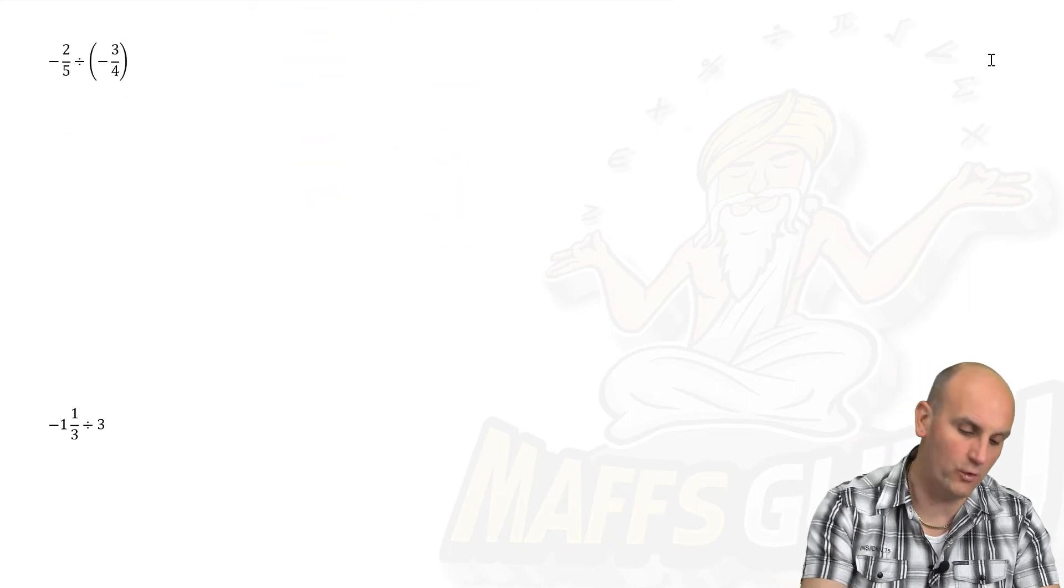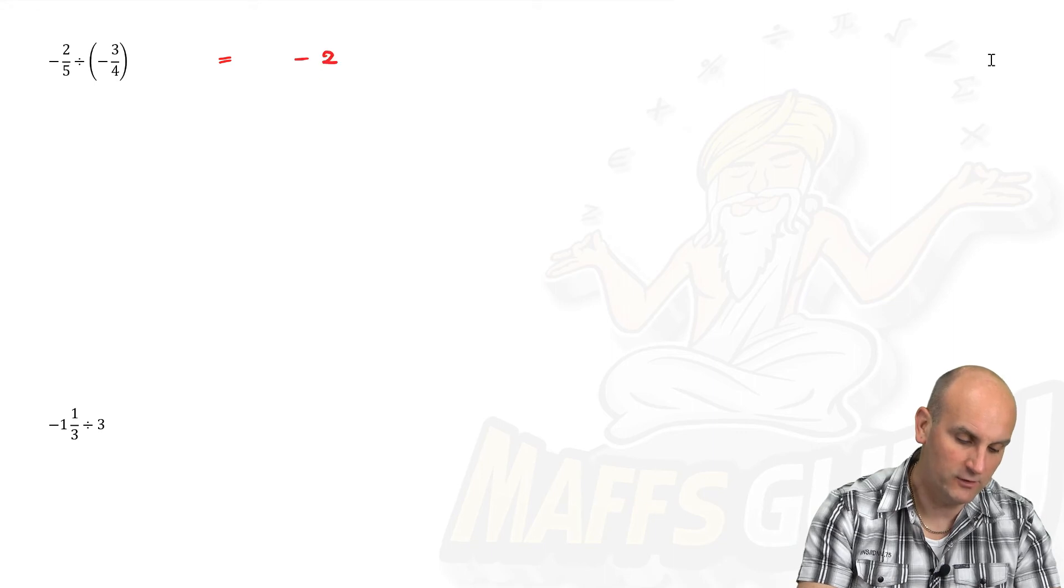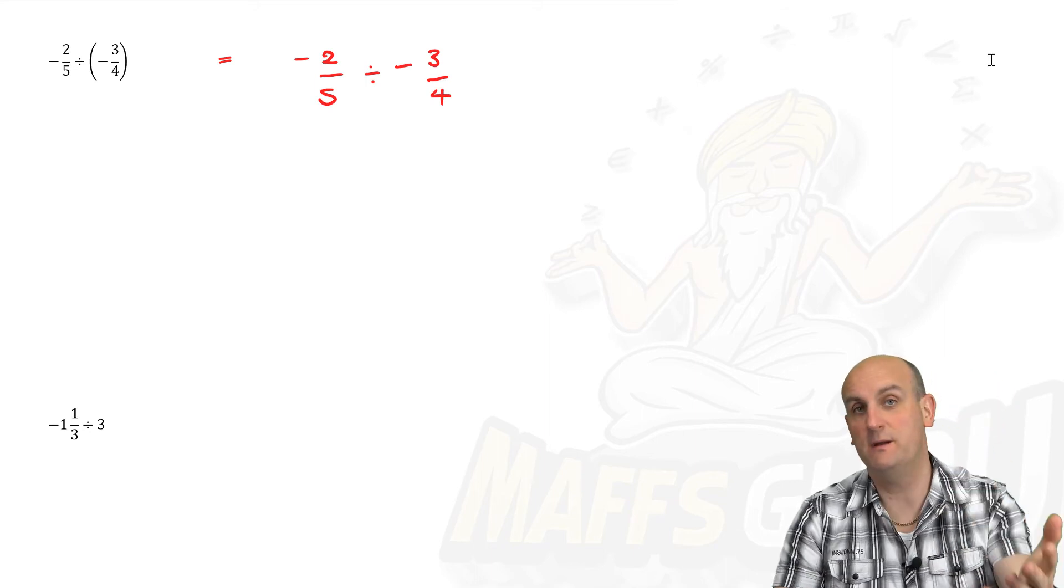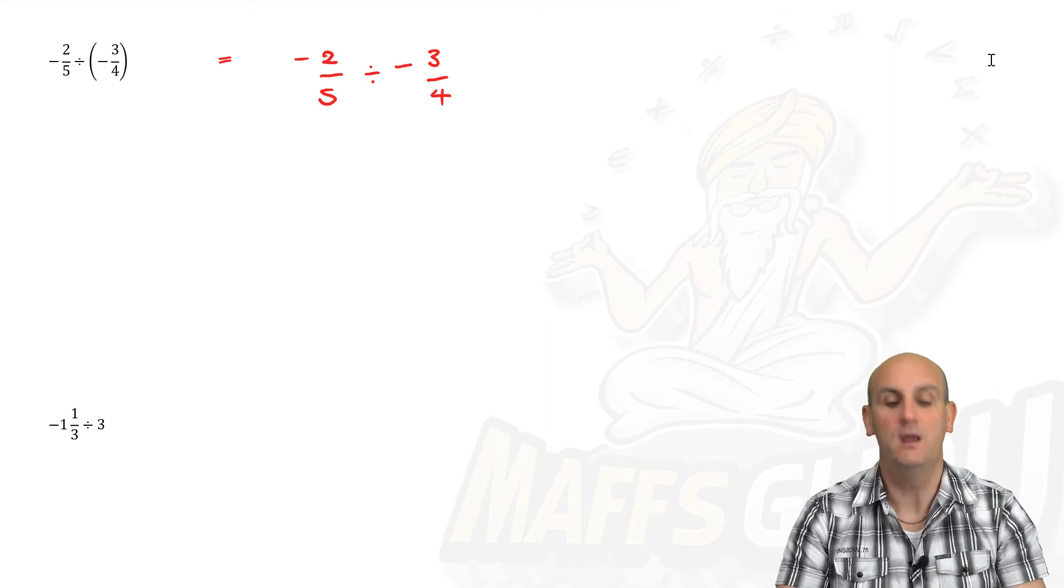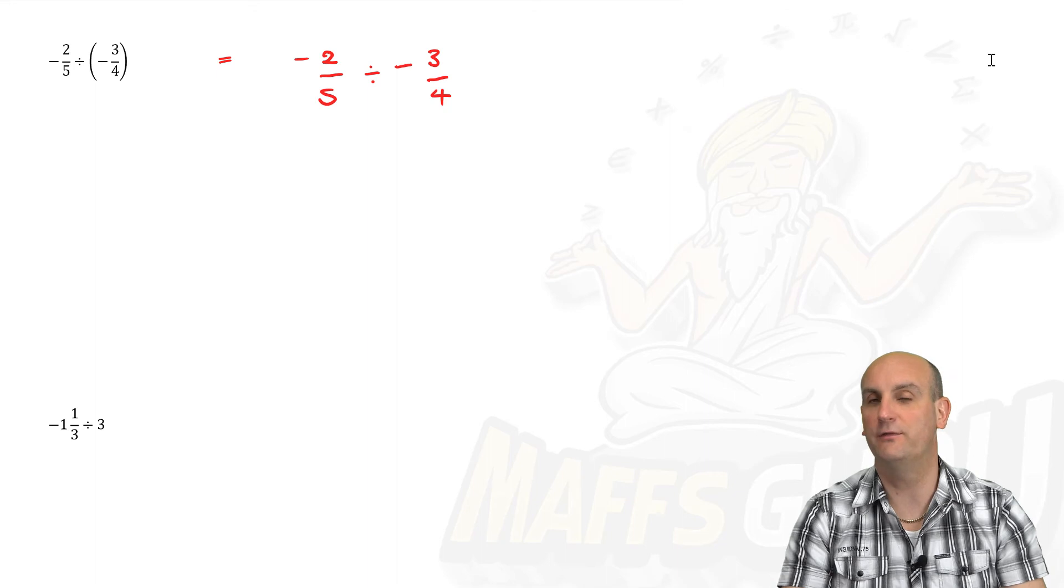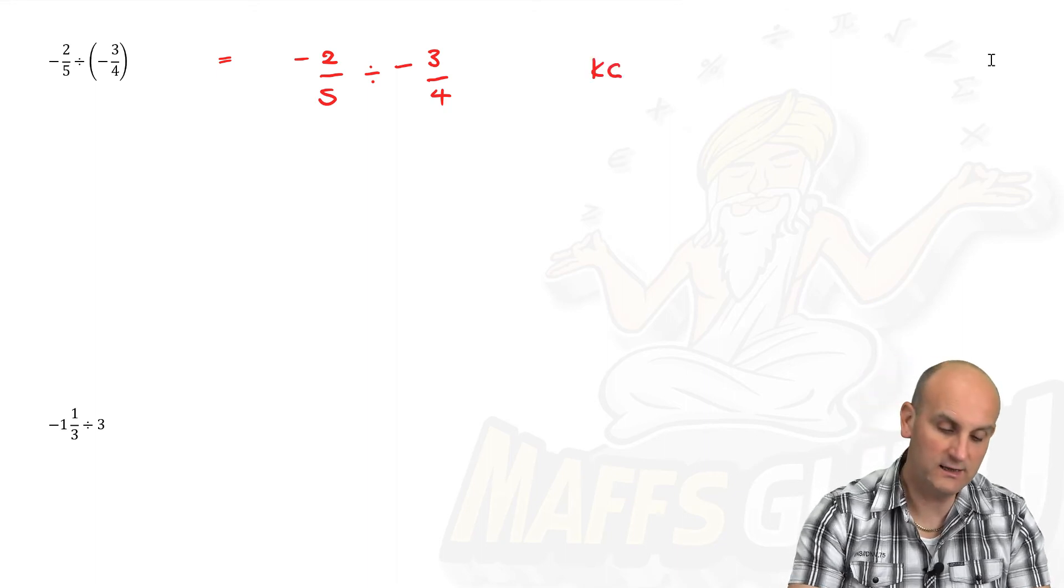We've got some division questions. Life is awesome. Again, take the bracket out. Minus two fifths divided by minus three quarters. Now the first thing's first. Remember, we can't do divide questions, but we can go to Kentucky chicken that is fried, or keep, change, flip.